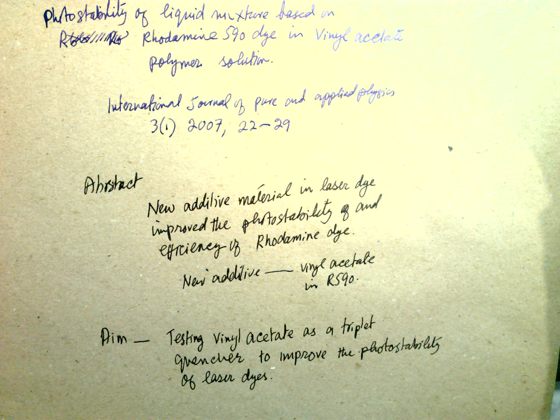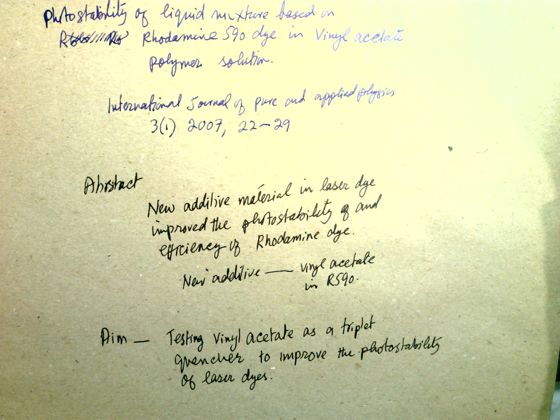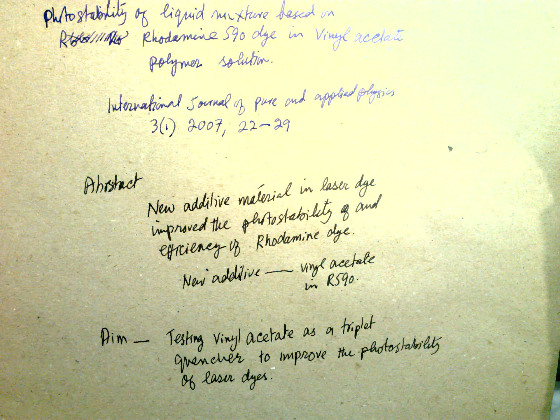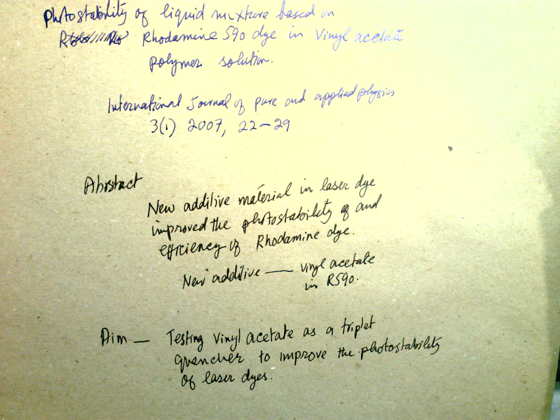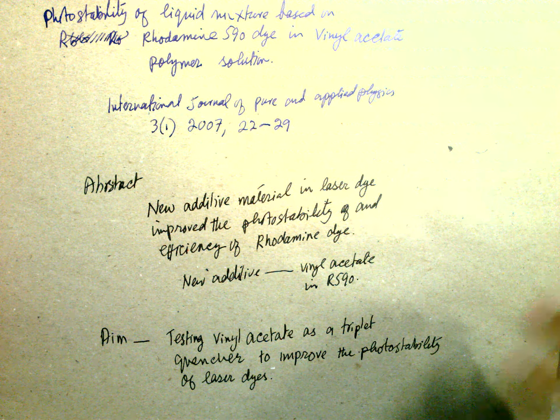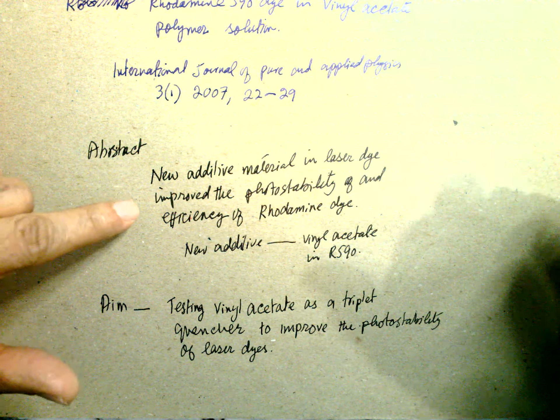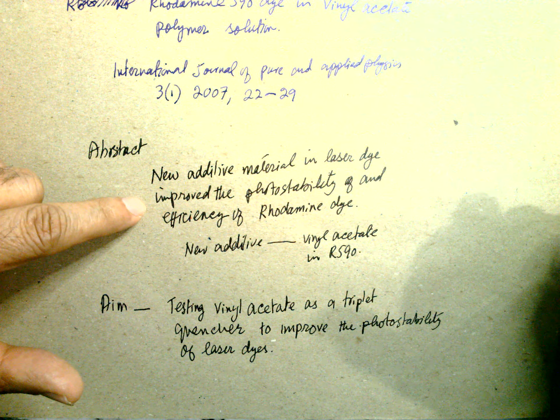Hello, this is a paper on photostability of a liquid mixture based on Rhodamine 590 dye in vinyl acetate polymer solution. International Journal of Pure and Applied Physics, 2007. Abstract: A new additive material in a laser dye has improved the photostability and efficiency of Rhodamine 590.